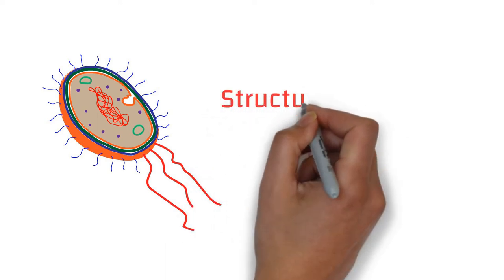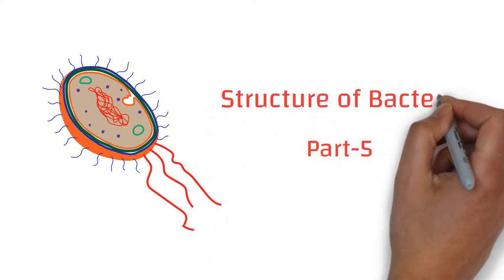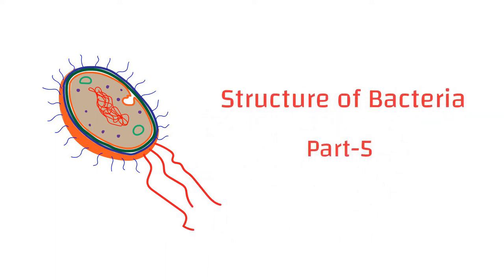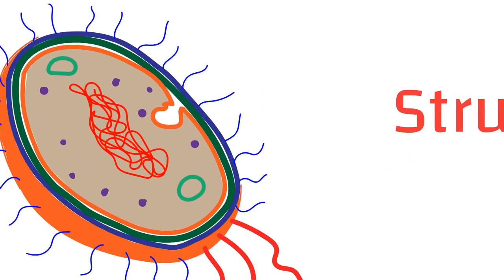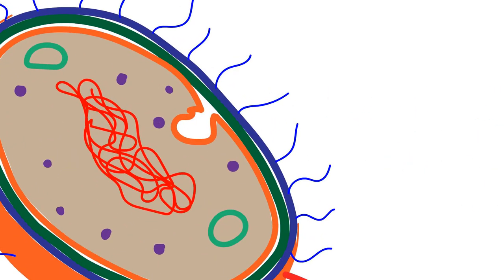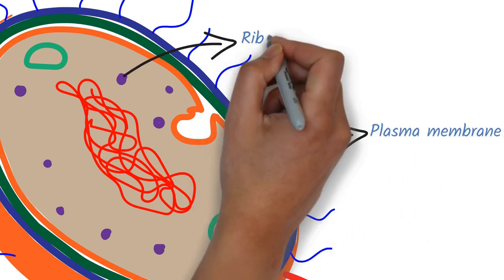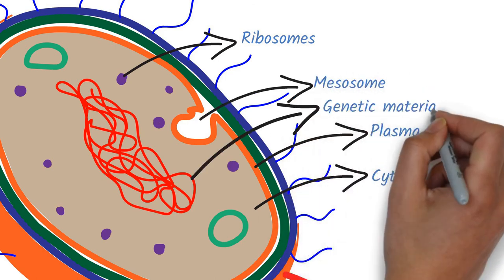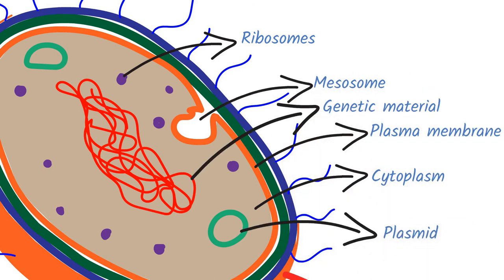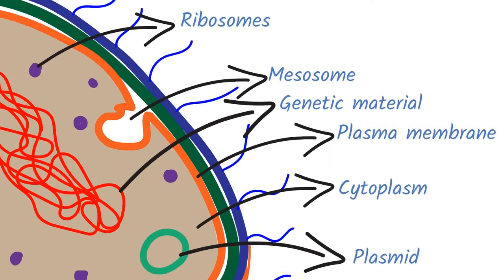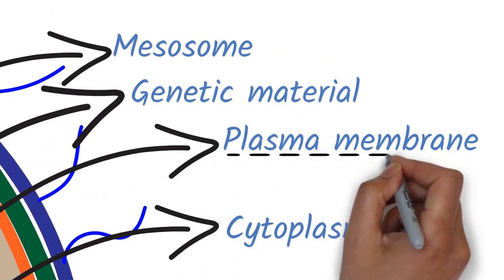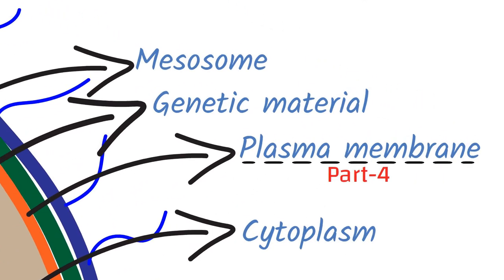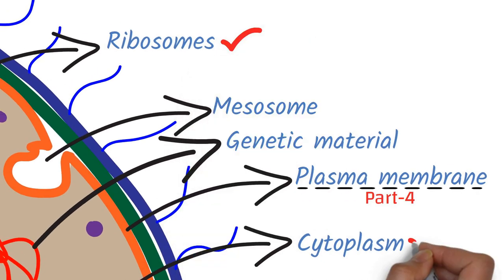Welcome to Part 5 of the Structure of Bacteria series. In this video, we will discuss structures internal to the bacterial cell wall. The main structures present inside the cell wall are plasma membrane, ribosomes, cytoplasm, mesosome, genetic material, and plasmid. We have already discussed plasma membrane in the Part 4 video. Let's check the other components in this video.